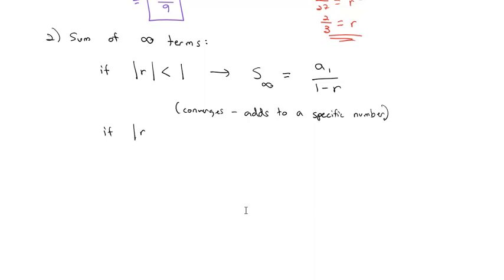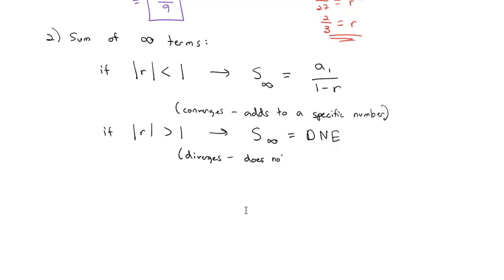However, if the absolute value of the ratio is greater than 1, the sum of the infinite terms does not exist — we call that diverges, because it does not add to a specific number. In other words, it adds to infinity.